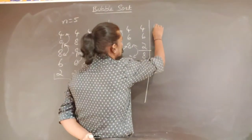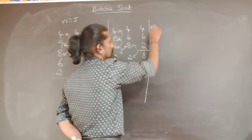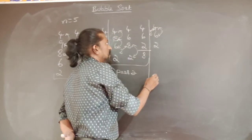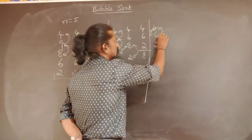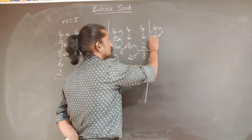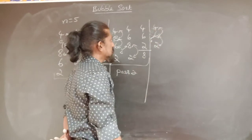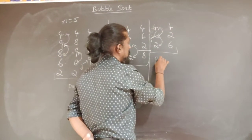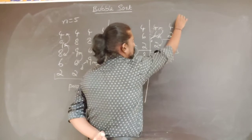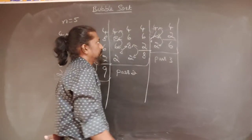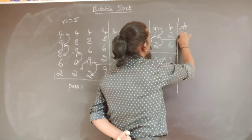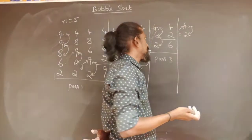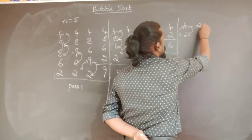In the third pass we start with the first two elements but stop after comparing second and third. j is pointing to position 1: a[j] is less than a[j+1], so they are in order — we leave it and move j. When 6 and 2 are compared they are out of order, so we swap: 4, 2, 6. This is pass 3, and the third largest element has reached its final sorted position.